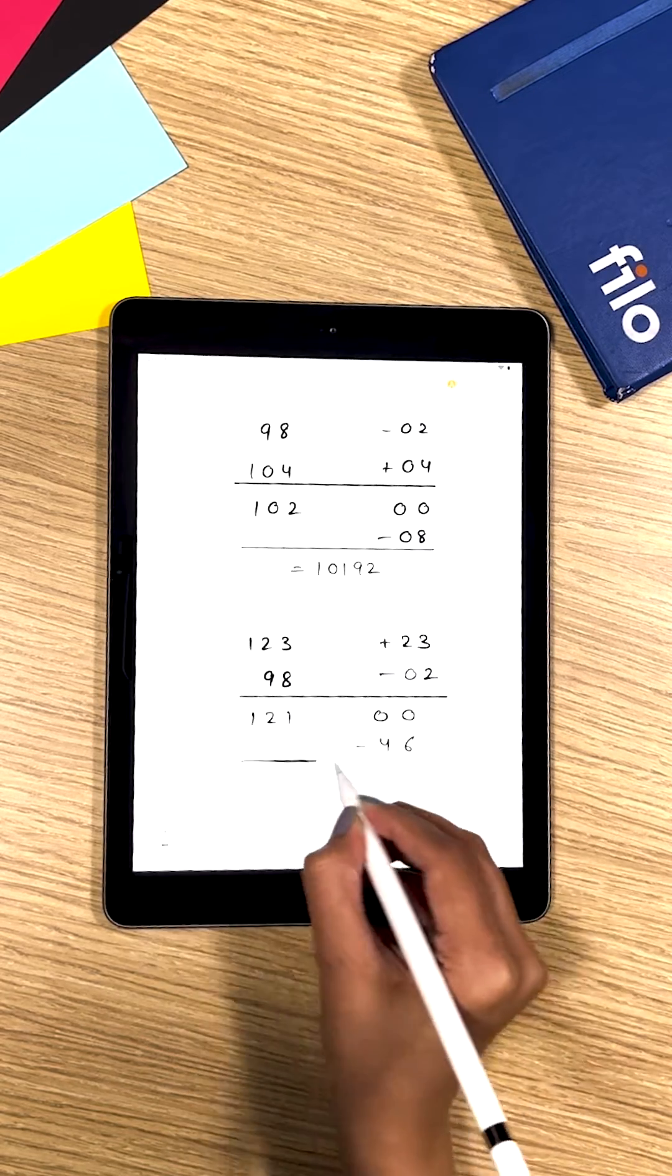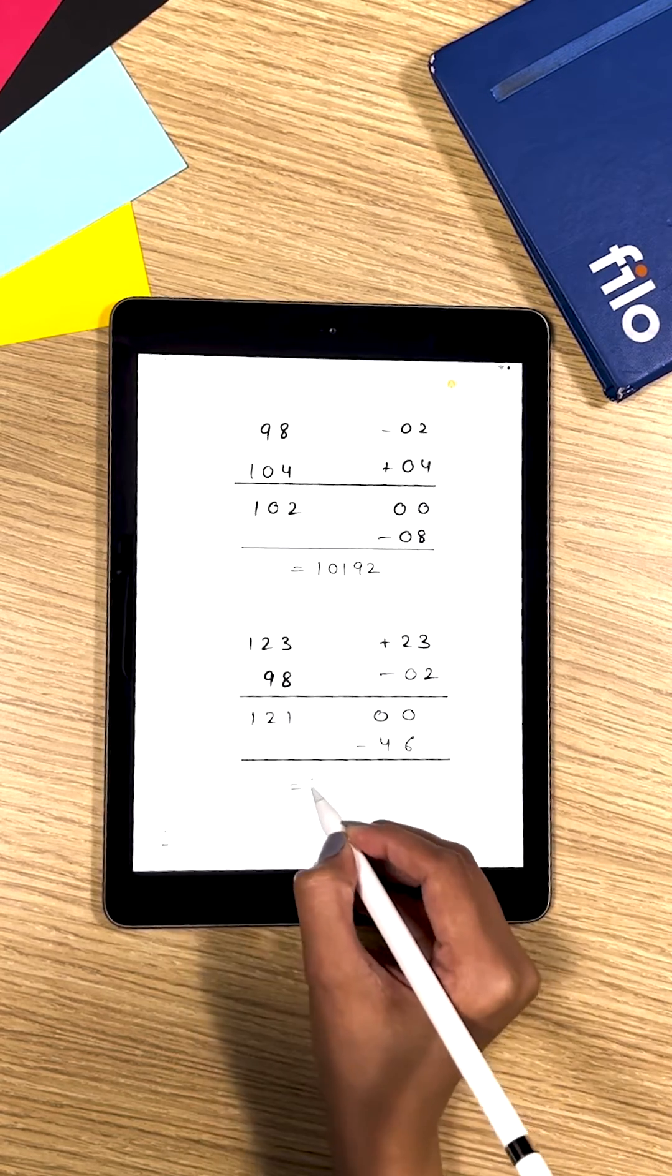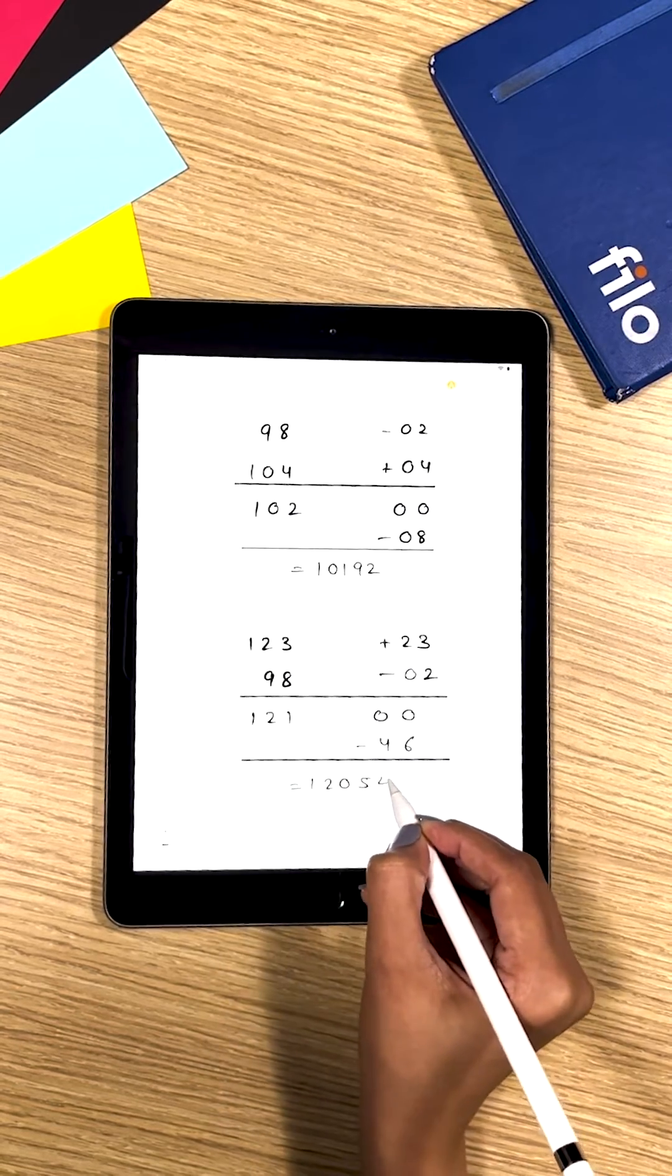So now you end up subtracting these two digits and you will get 12054 and that becomes your answer.